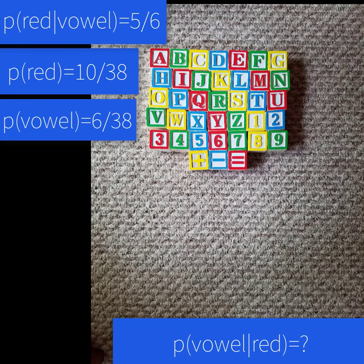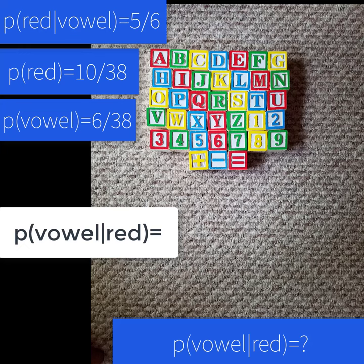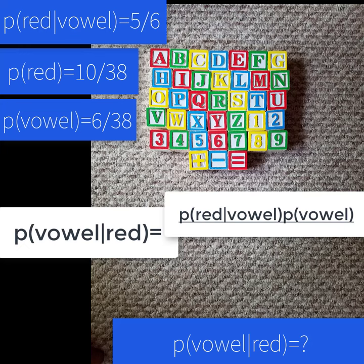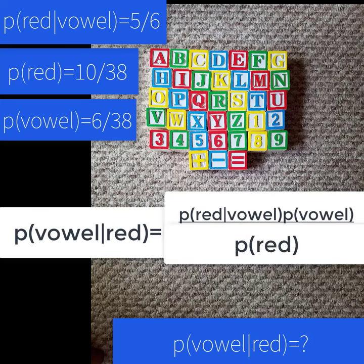We know the probability of a vowel given red is equal to a fraction where the numerator is the probability of red given a vowel times probability of a vowel divided by the probability of red in the denominator.